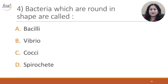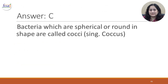Question 4: Bacteria which are round in shape are called A. Bacilli, B. Vibrio, C. Cocci, D. Spirochete. The correct answer is C. Bacteria which are spherical or round in shape are called Cocci, singular Coccus.